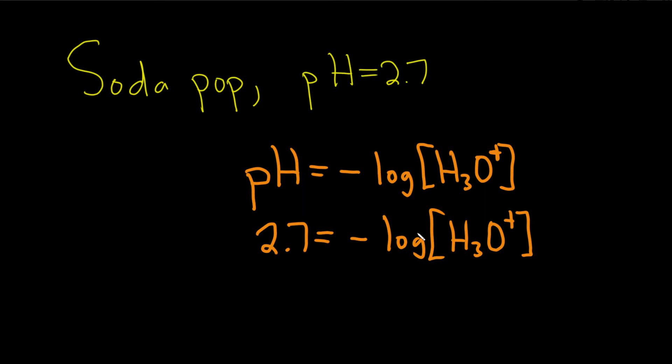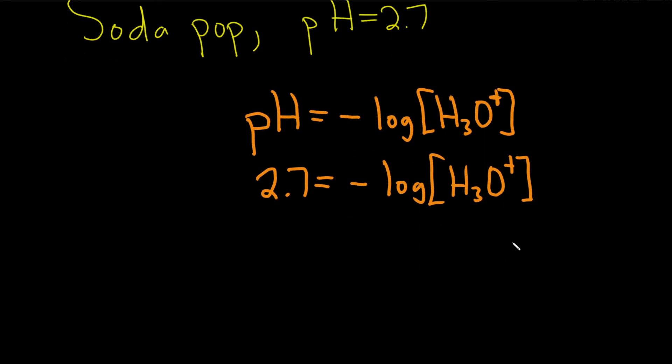Now we need to get rid of the log, but the thing is, there's a negative here. So you first have to get rid of the negative. If we divide both sides by negative 1, it gives us negative 2.7 equals log [H3O+]. Step 1 is get rid of that negative.